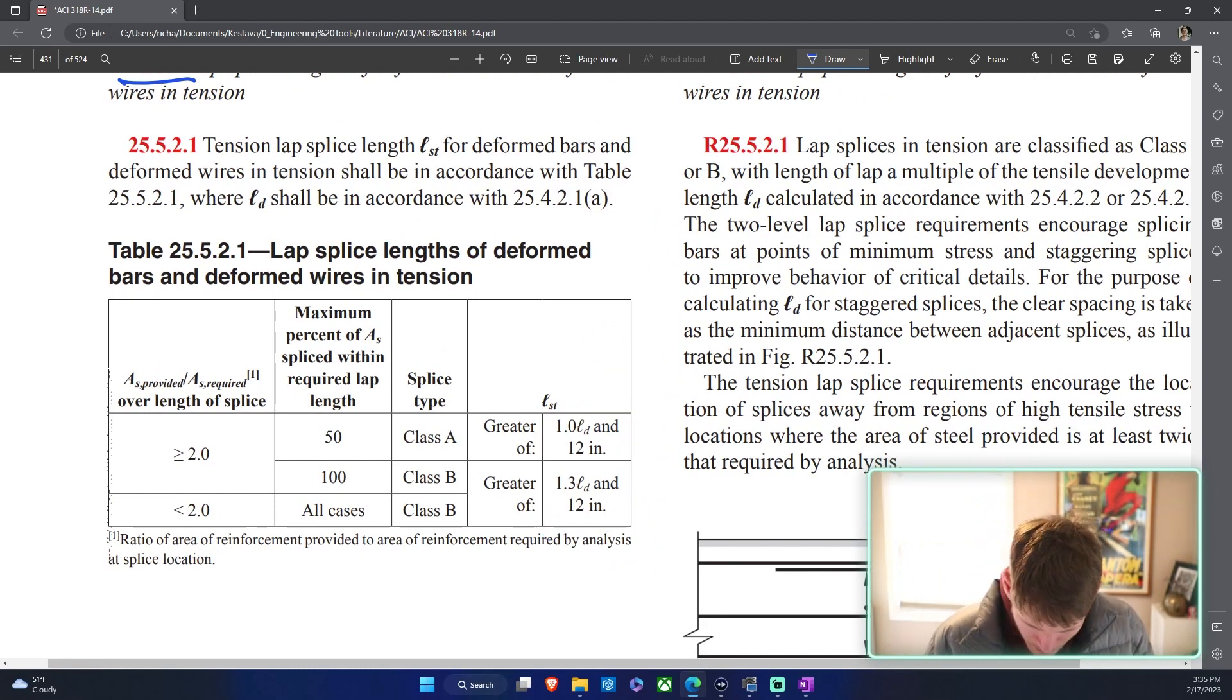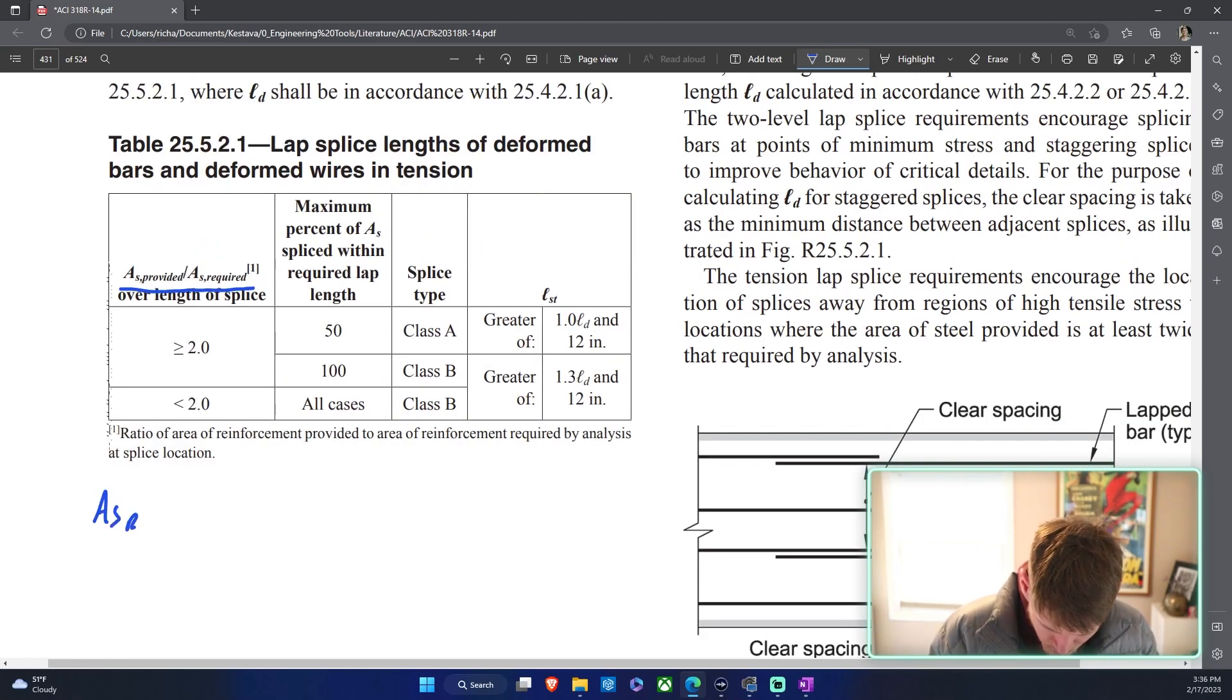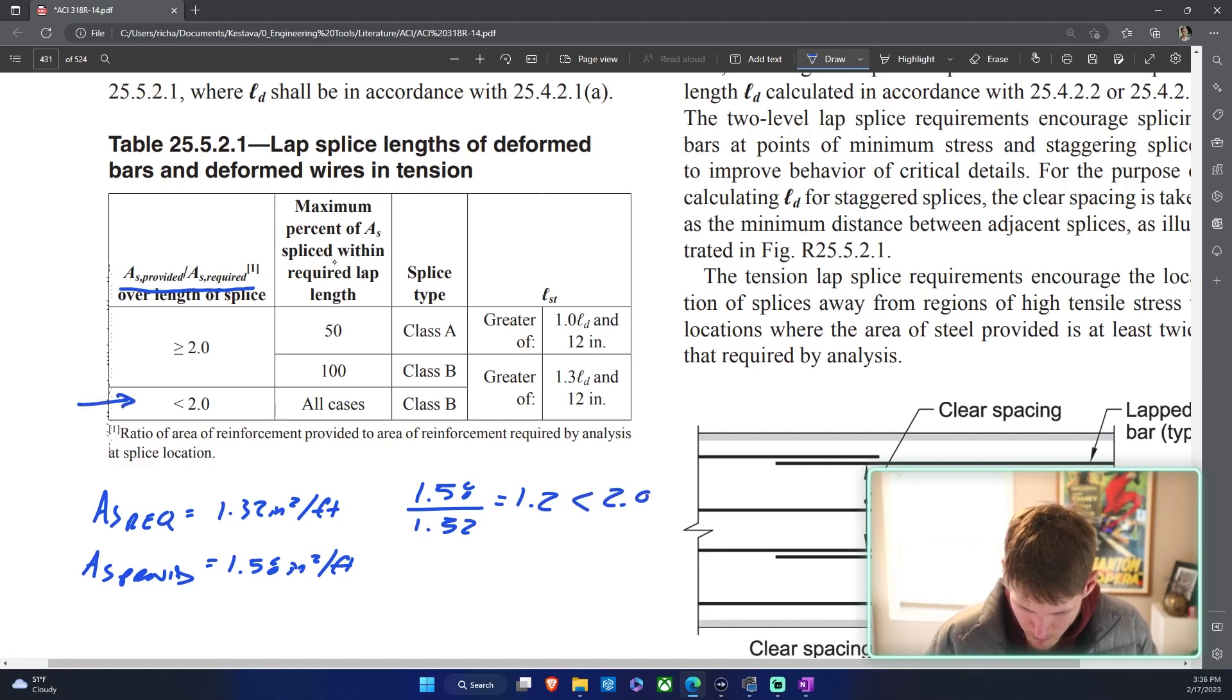As I said in the beginning, chapter 25.5 splices, table 25.5.2.1 is where we find ourselves. Because all of the sections in the ACI are so dang long. First we need to start: as provided over as required. Previously we knew that as required was equal to 1.32 inches squared per foot. As provided is equal to 1.58 inches squared per foot. 1.58 over 1.32 equals 1.2, which is less than 2.0, so we fall into this category right here. We are just straight up all cases, splice type is class B.